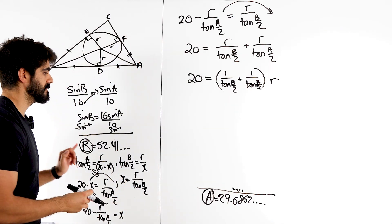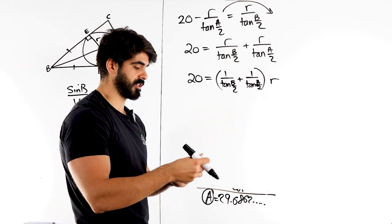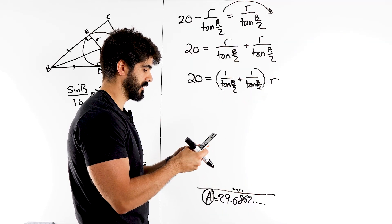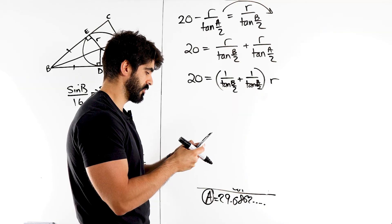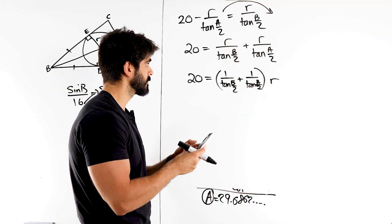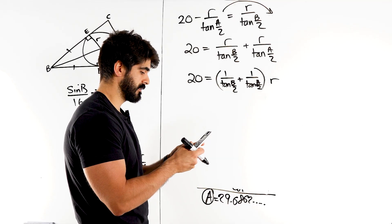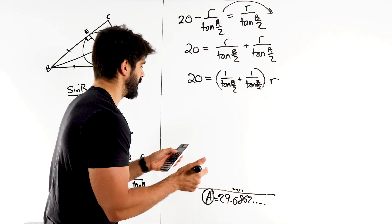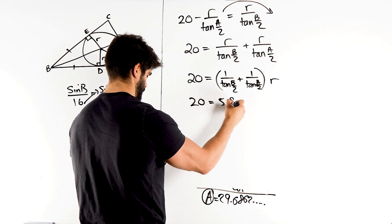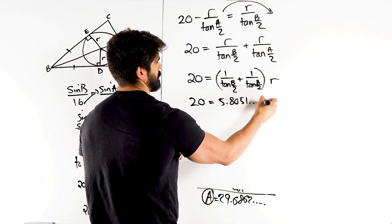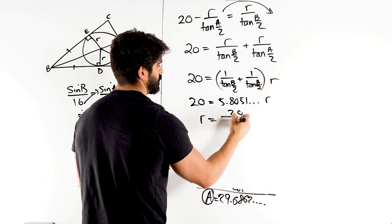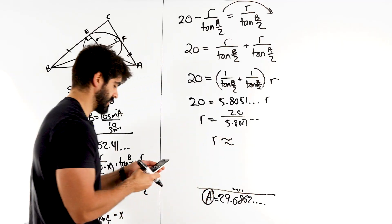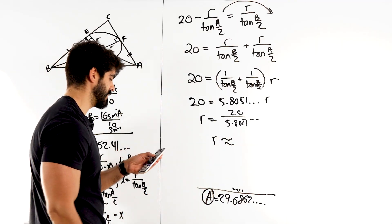We're going to do 20 divided by this. Now like I said guys, we have a and b. Yeah, so I'm just going to utilise a and b. So I'm going to type that in first. So I've got 1 over tan of b over 2 plus 1 over tan of a over 2. Which gives me 5.8 dot dot dot. R. So r is 20 over that. Which they wanted it to one decimal place. 20 divided by the answer. 3.4